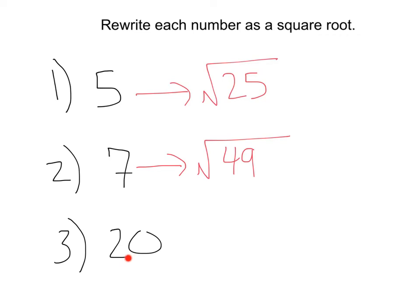Let's do one more. 20 we can rewrite as the square root of, and if you're not exactly sure, we could just do 20 squared. 20 times 20 would be 400. So we know the square root of 400 would be 20.